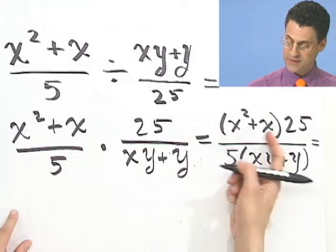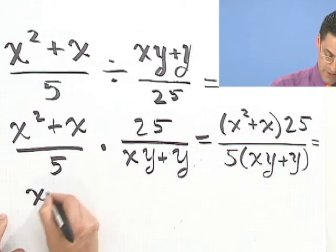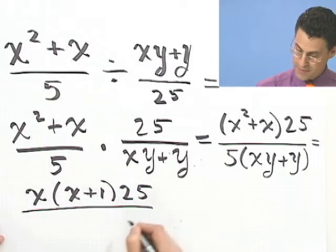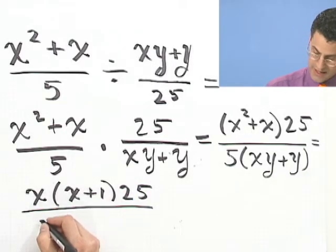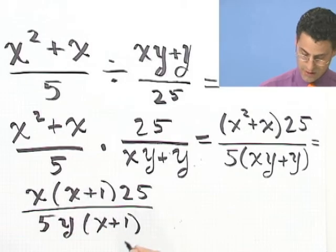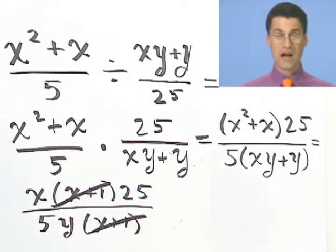Now, I can factor a little bit here. I can factor a common factor of an x on top. Let's do that. I've got x times x plus 1, and I've got a 25. And then on the bottom, I can factor out a y, and so I'd have 5y times x plus 1. Oh, neat! The x plus 1's common factor can go away.